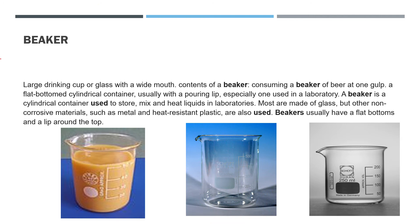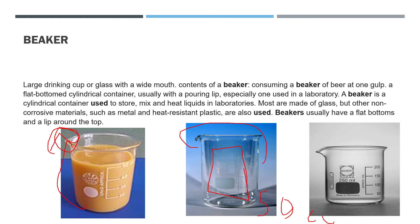A beaker is like a large drinking cup. You can see it has a small lip which helps pour out liquids. It is used in chemical labs to store liquids, and it is measured in 50 cc and 100 cc.